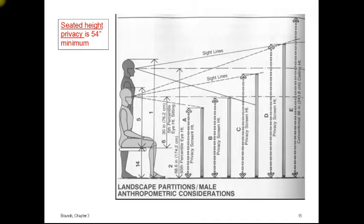This is another example of the seated height privacy illustration. The panel C is the 54-inch, which goes slightly above our head, and that's our minimum seated height privacy. But today, partitions are getting lower, and we're using more collaborative workspace.